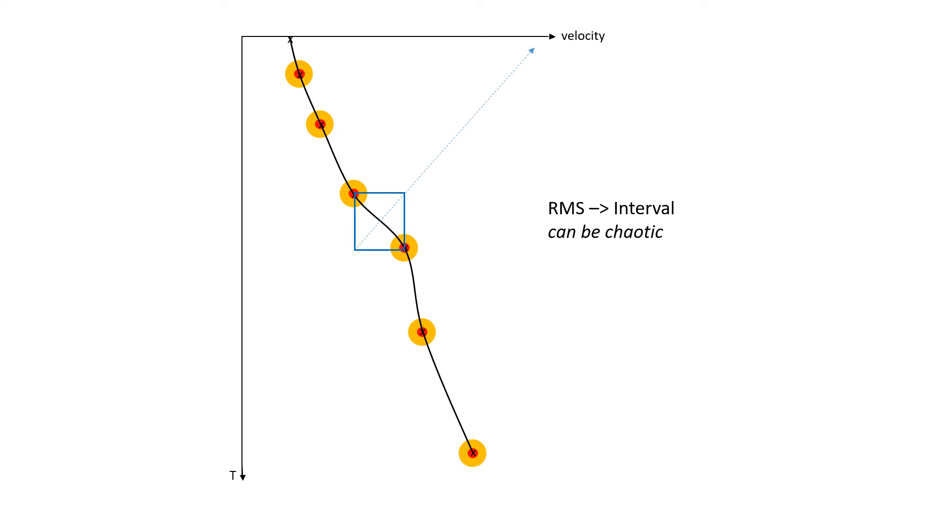Another thing between the relationship between RMS velocities and interval velocities is that if you pick them in time with RMS, transferring them to interval velocities can be a bit chaotic. Well, let's see why that is.